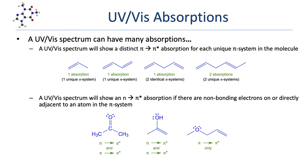N-to-pi-star absorptions involve the excitation of a non-bonding electron, like a lone pair, into a pi-star orbital. An n-to-pi-star absorption will only occur if there are non-bonding electrons either on or directly adjacent to an atom in the pi system. In the first molecule, the pi bond allows a pi-to-pi-star absorption, and since oxygen with lone pairs is part of the pi system, it will also show an n-to-pi-star absorption. Similarly, the second molecule's oxygen — directly adjacent to the pi system — gives rise to both absorptions. In the last example, the lone pairs are not on or adjacent to the pi system, so no n-to-pi-star absorption occurs.